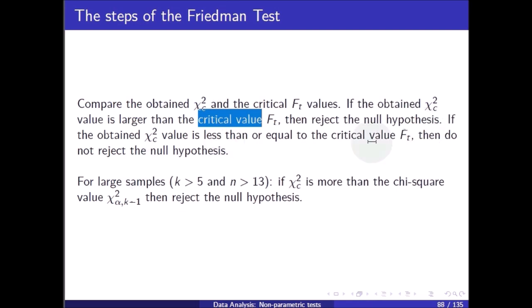If the obtained value is less than or equal to the critical value, then do not reject the null hypothesis. For large samples — say k greater than 5 and n greater than 13 — if the chi-square statistic is more than the chi-square table value, then reject the null hypothesis.